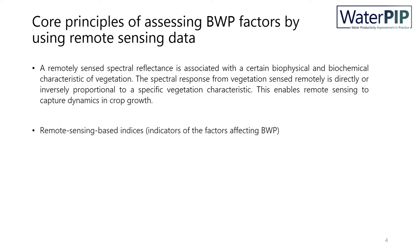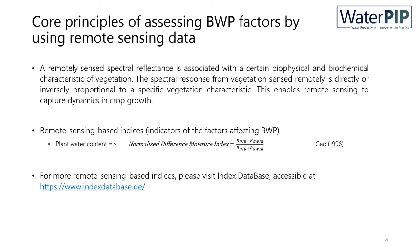Different spectral reflectances are combined together to make indices. These indices can be used as indicators of factors affecting water productivity. For example, the Normalized Difference Moisture Index (NDMI) is a combination of spectral reflectances in near-infrared and shortwave infrared spectral domains, which can be used to identify plant water content. There are thousands of remote sensing based indices, most of them compiled in the index database accessible at the link shown below.